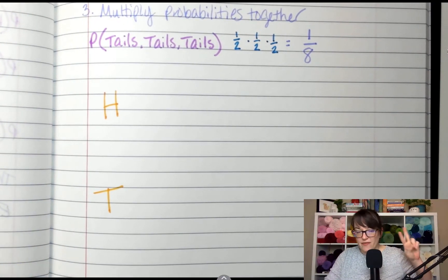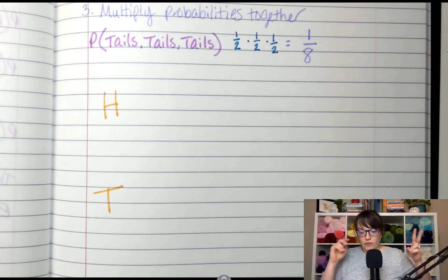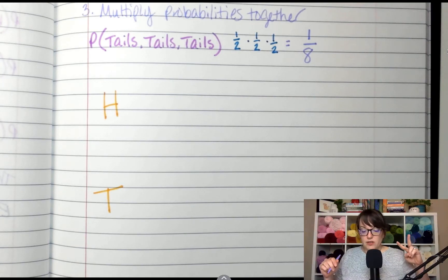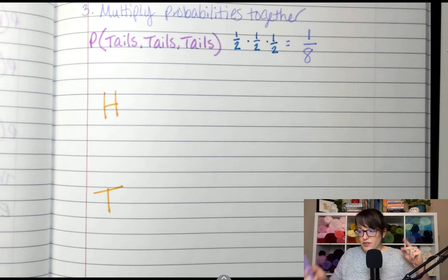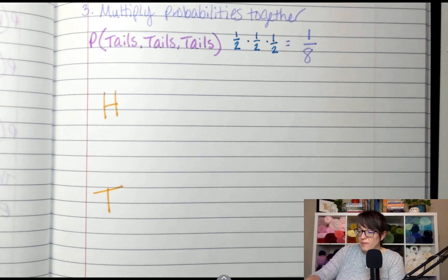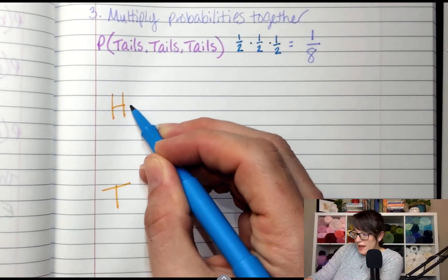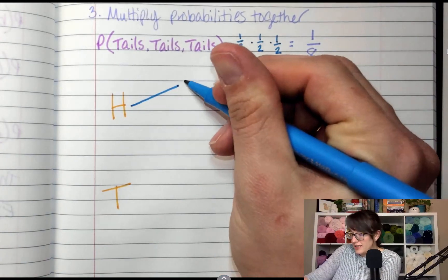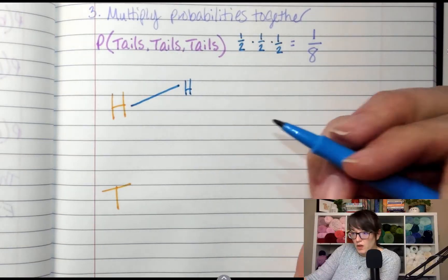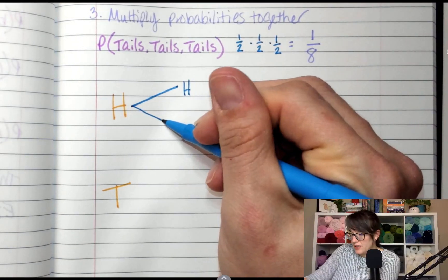Now, the second event, I'm going to flip a coin. What are my two possible outcomes? Heads or tails again. So when I flip this coin a second time, if I landed on heads the first time, I could potentially land on heads the second time. Or I could land on tails the second time.